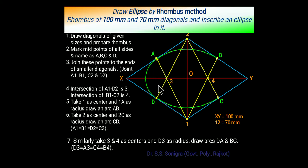Then point 3 as a center, 3D as a radius or 3A as a radius, draw an arc. Similarly, point 4 as a center, 4B as a radius, draw an arc. So this is given ellipse of given dimensions using rhombus method.